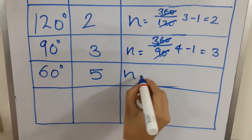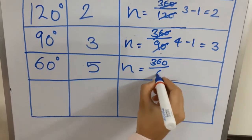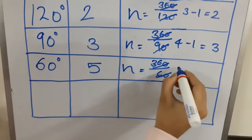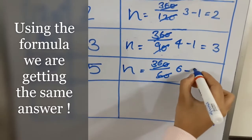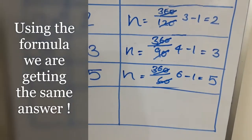Let us calculate n using the formula. 360 divided by 60 is 6 minus 1, we get 5. So we got five number of images.